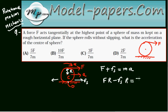And this is nothing but I times alpha, where I is the moment of inertia of the sphere about center C, and alpha is the angular acceleration.